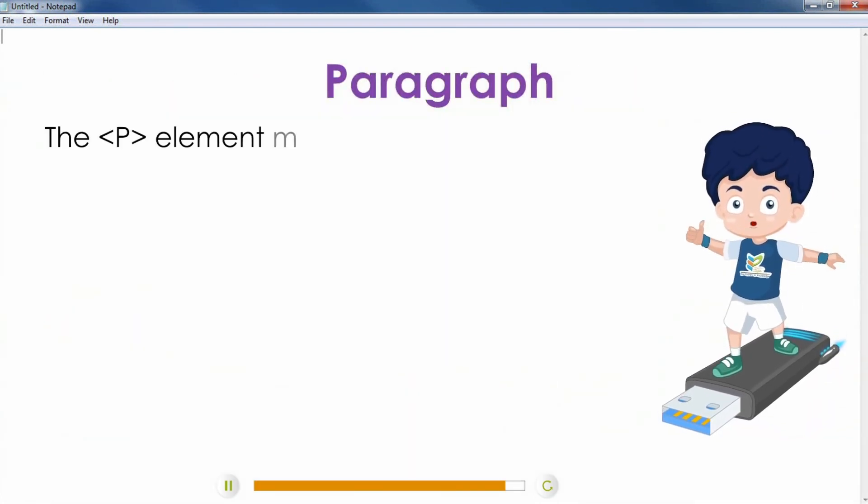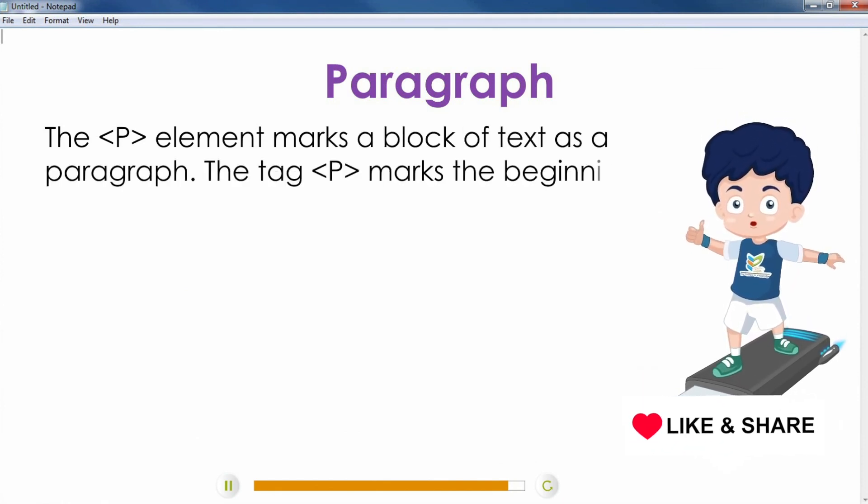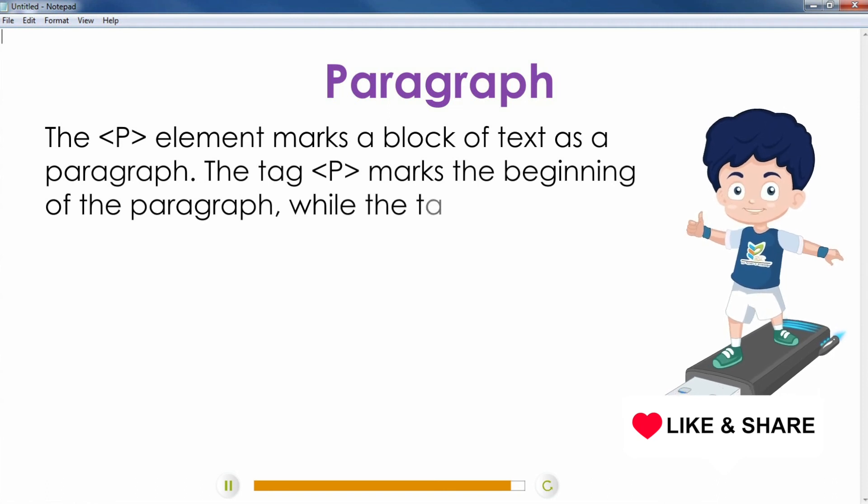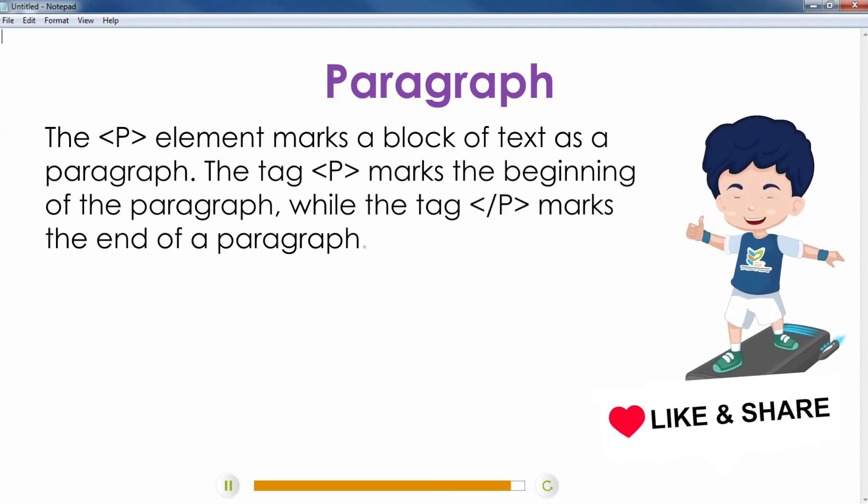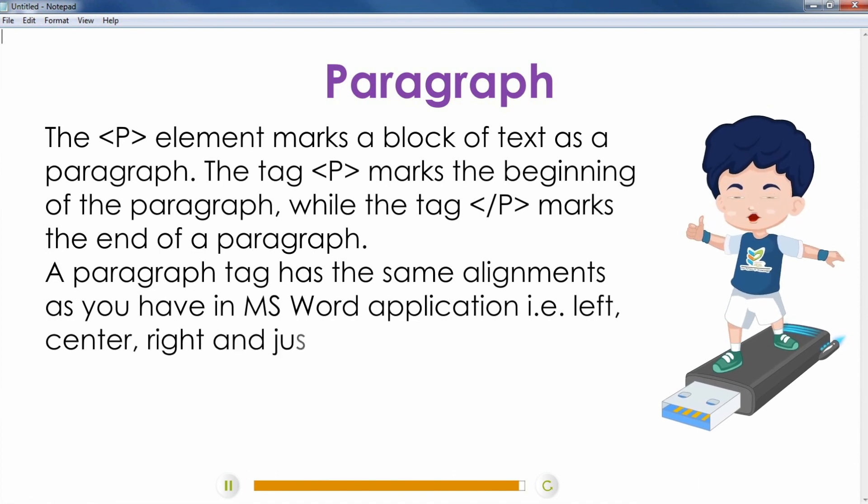Paragraph: The p element marks a block of text as a paragraph. The tag p marks the beginning of the paragraph while the tag slash p marks the end of a paragraph. A paragraph tag has the same alignments as you have in MS Word application: left, center, right and justify. Syntax: P align equals alignment name, type your paragraph, slash p.